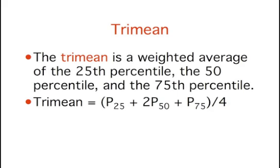The formula for the tri-mean is the 25th percentile (P25) plus twice the 50th percentile plus the 75th percentile, all divided by 4. As you can see from the formula, the median is weighted twice as much as either the 25th or the 75th percentile.